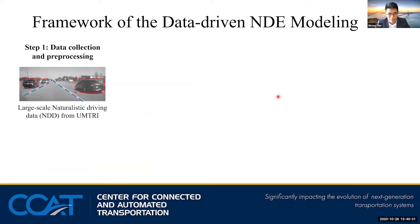There are three steps. The first one is naturalistic driving data collection and pre-processing. Naturalistic driving data, which is NDD, is very important because it records the human driving behaviors when facing different situations, which is very important if you want to construct a realistic environment. Here, we use the NDD collected by the MCITY at the University of Michigan for this study.